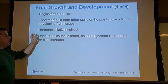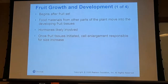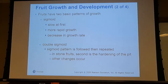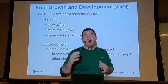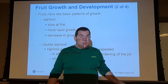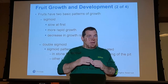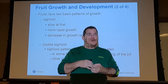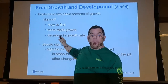Once fruit tissues are initiated, cell enlargement is what makes the fruit grow and get bigger. Fruits have two basic growth patterns. A sigmoid pattern is slow at first, then has a rapid growth period, and then declines again — much like human growth. Elementary school we're small, then somewhere between seventh and ninth grade there's a major growth spurt, just like a beanstalk.